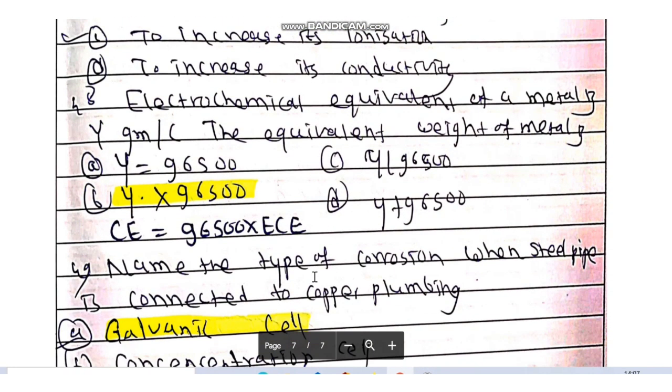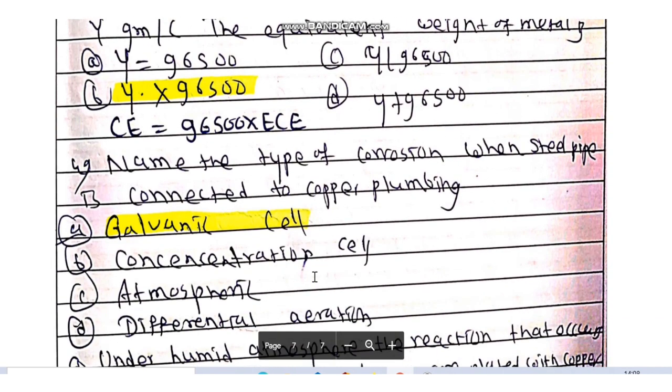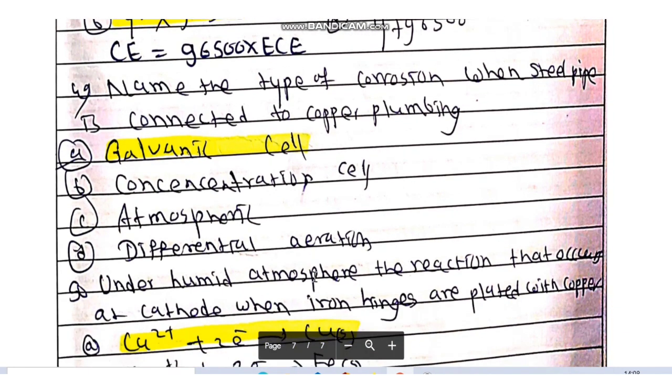Electrochemical equivalent of metal is Y grams per coulomb. The equivalent weight of metal is Y times 96,500. That is, chemical equivalent CE is equal to 96,500 times electrochemical equivalent. Name the type of corrosion when steel pipe is connected to copper plumbing. Galvanic corrosion takes place or galvanic cell formation.